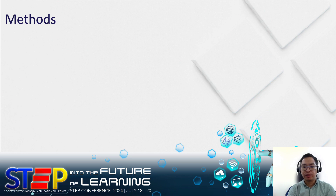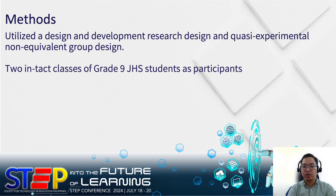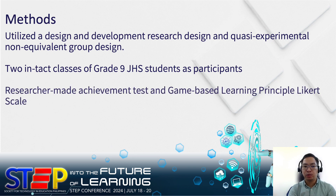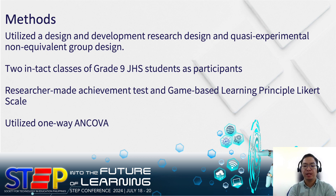This research study made use of the design and development research design. The researchers designed and created a board game under the guidance of the foundations of game-based learning, which was used as a supplementary activity for students' learning processes in ionic and covalent bonding. This study also used a quasi-experimental quantitative research design to evaluate the board game. One intact class served as a control group utilizing the conventional approach as enshrined in the curriculum, and the other intact class served as an experimental group where the intervention was utilized as a supplementary teaching tool. The participants were two entire classes of 9th grade junior high school students ages 14 to 16 years old from a nearby government-run and operated high school. The one-way ANCOVA was used to examine the effect of an independent variable on a dependent variable while removing the effect of the covariate factor — in this case, the pretest.